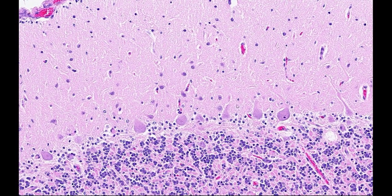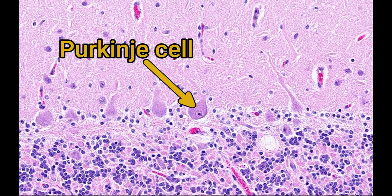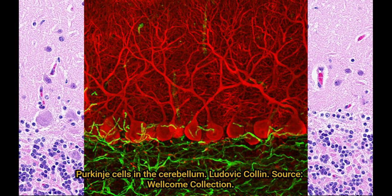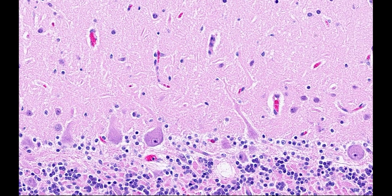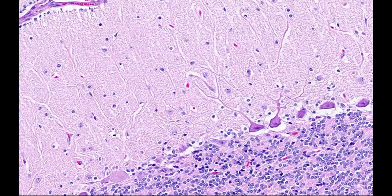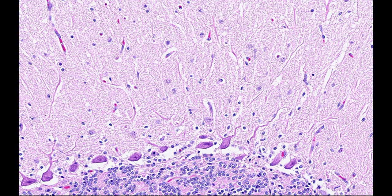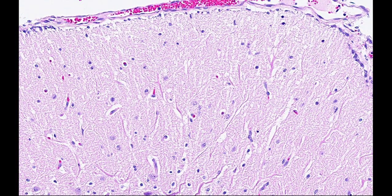Purkinje cells, which we can see in the Purkinje cell layer, are amongst the largest neurons in the brain — here's a good example of one. It has a huge cell body with a large nucleus and a single nucleolus. The distinctive feature of the Purkinje cell is their large branching dendrites that they send out into the molecular layer. You can see just a little bit of the extent of it on H&E sections, and in fact there's a good section on this slide where the Purkinje cells are very condensed and you can see their dendrites forming these huge branching networks all the way up into the top of the molecular layer.